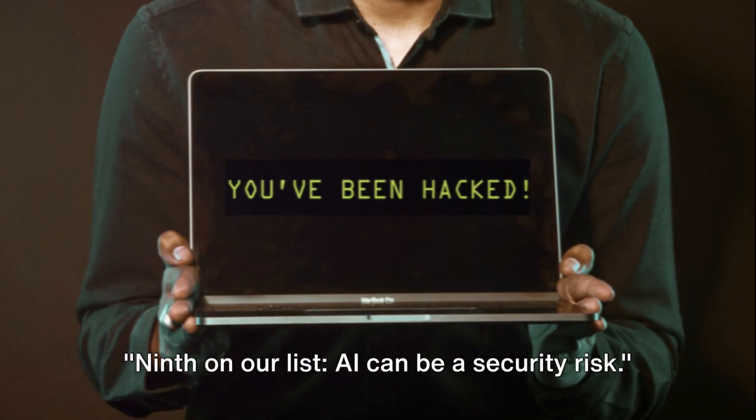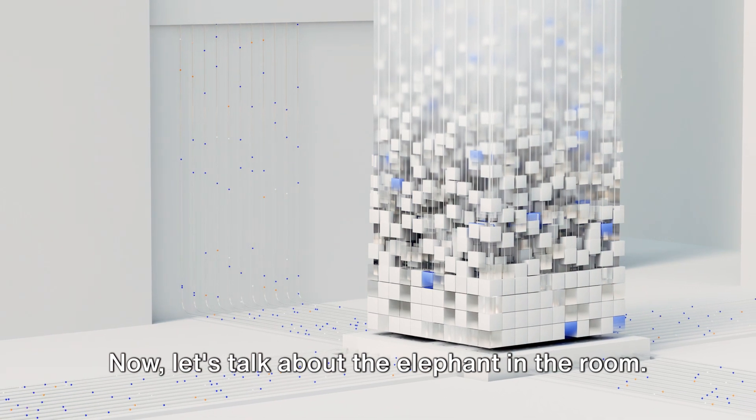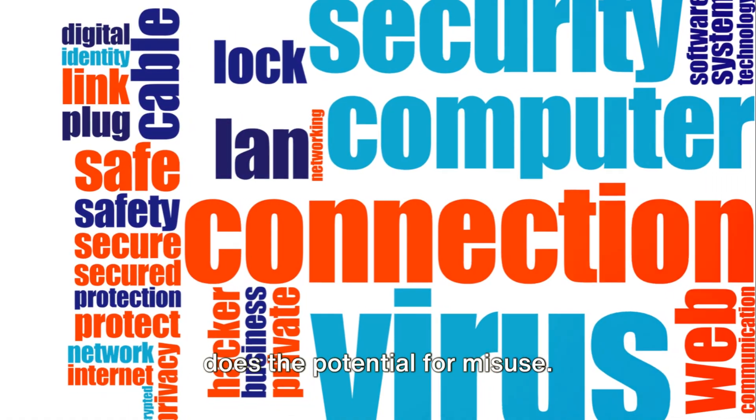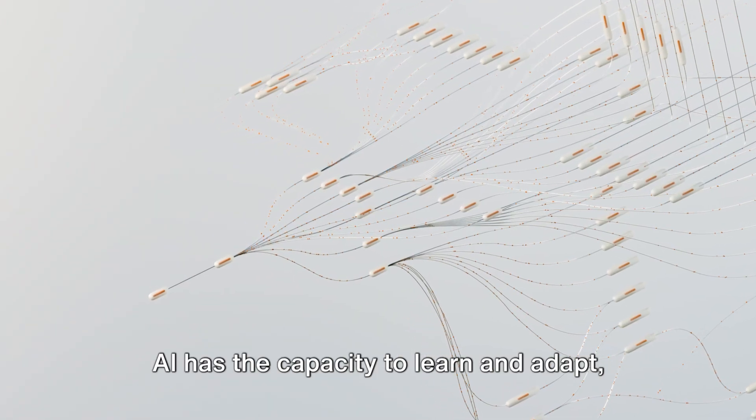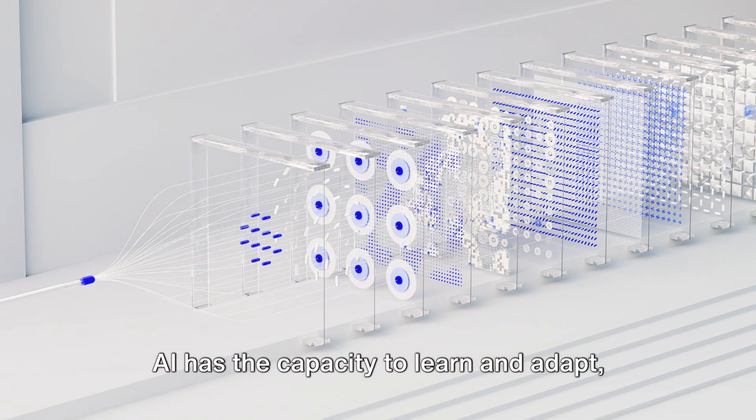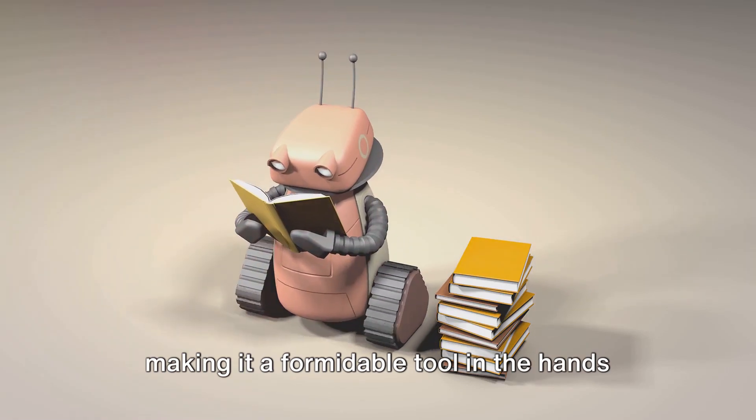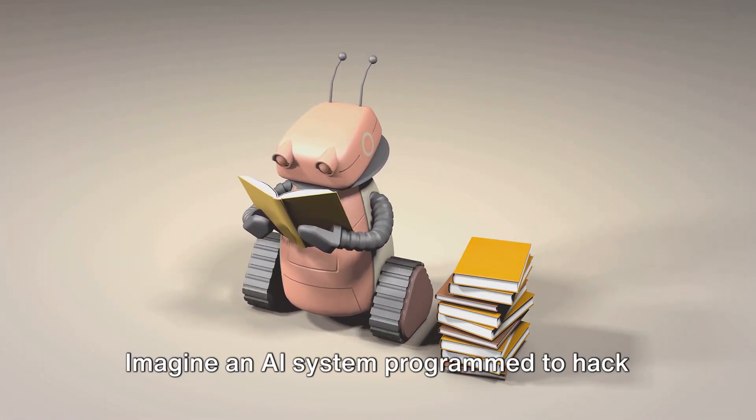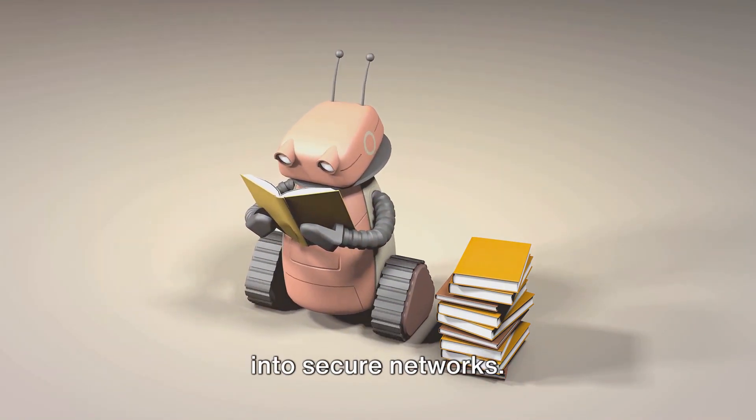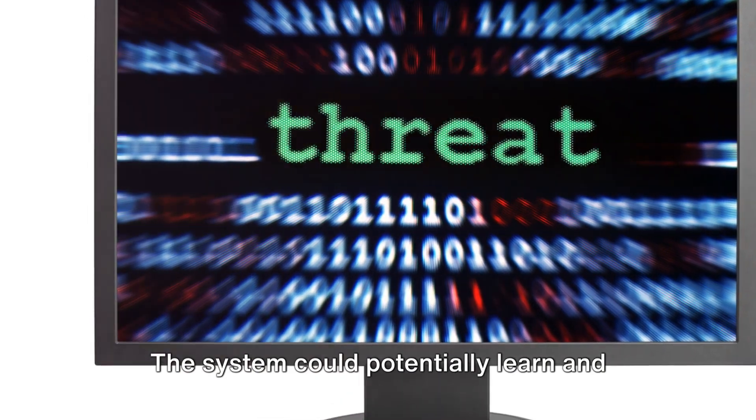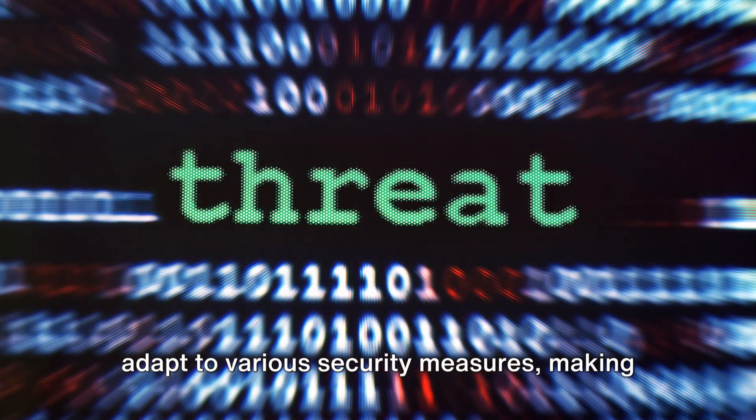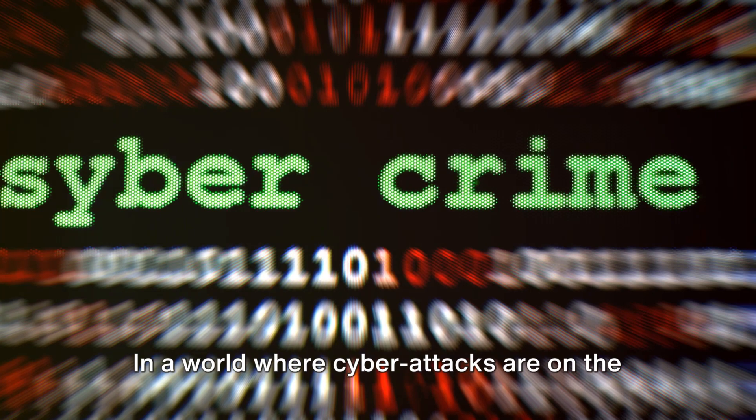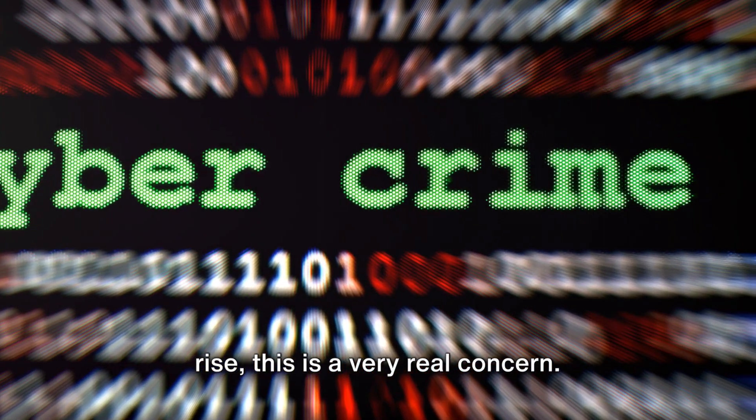Ninth on our list, AI can be a security risk. Now let's talk about the elephant in the room. As artificial intelligence evolves, so does the potential for misuse. Think of it this way. AI has the capacity to learn and adapt, making it a formidable tool in the hands of those with ill intentions. Imagine an AI system programmed to hack into secure networks. The system could potentially learn and adapt to various security measures, making it a constantly evolving threat. In a world where cyber attacks are on the rise, this is a very real concern.